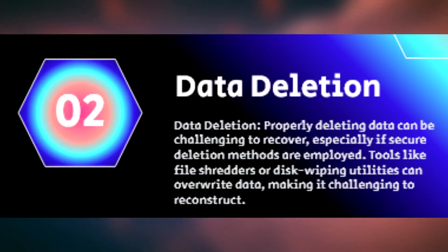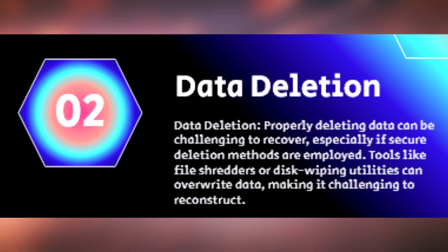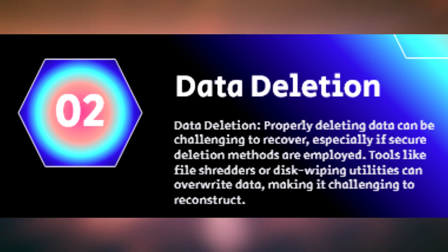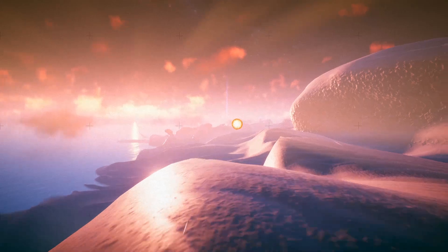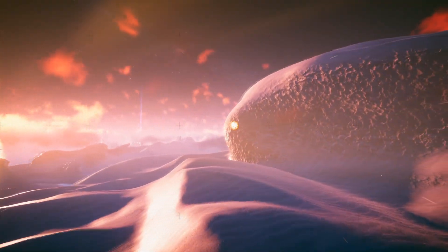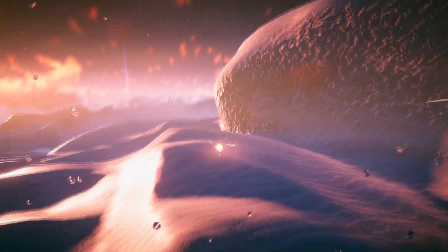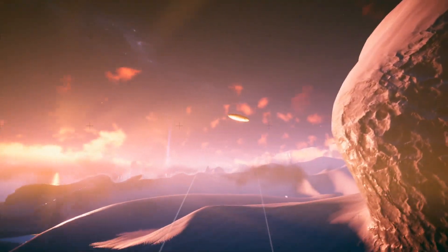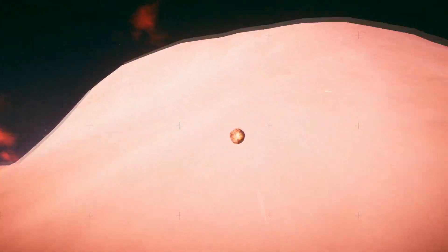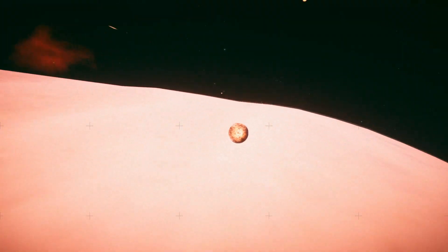Number two is data deletion — the actual deletion of the data that you are trying to hide or mask. Properly deleting data can be challenging to recover, especially if tools like file shredders or disk wiping utilities are employed while you're actually deleting your files. This can make it really hard for the forensics team to actually reconstruct your data and make you a little bit safer.